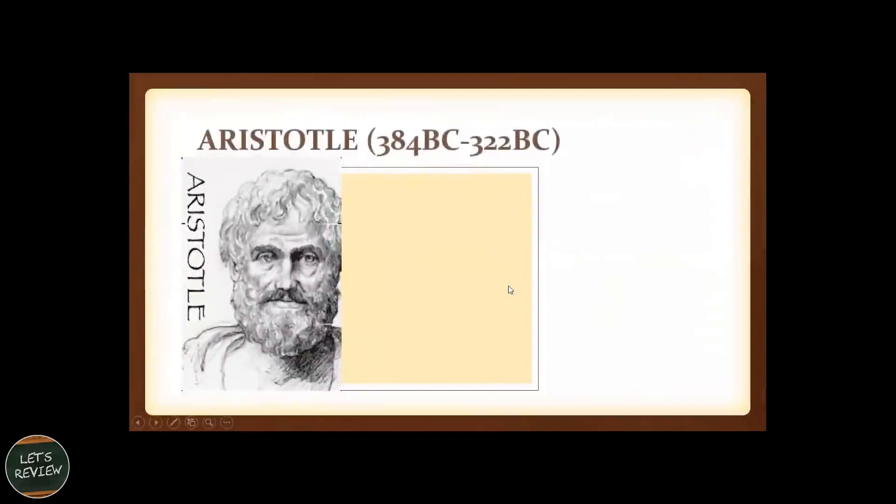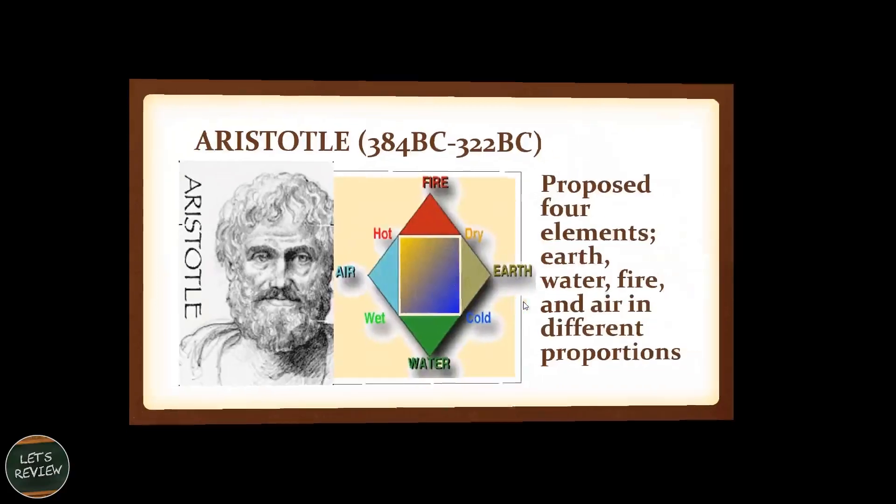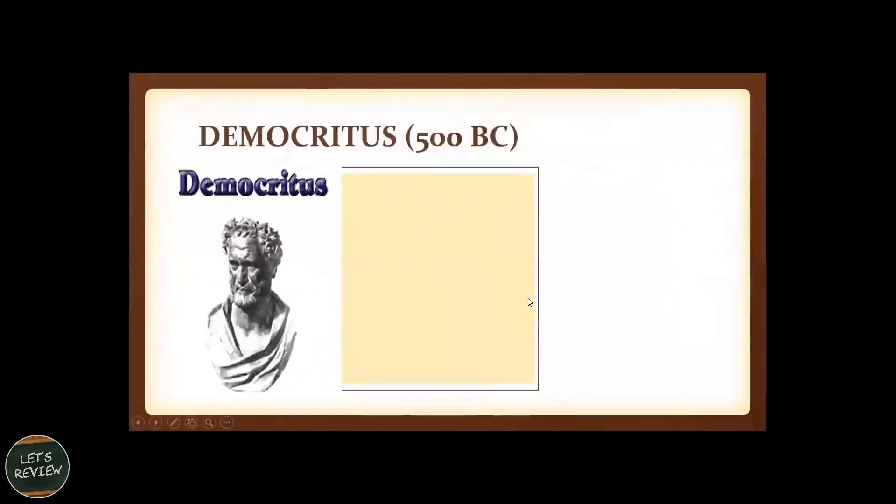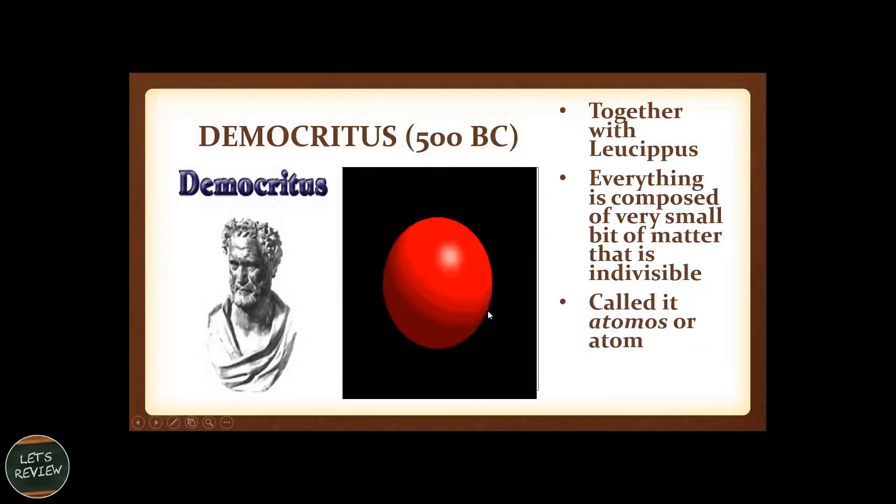Followed by Aristotle, 384 BC to 322 BC. He proposed four elements also: earth, water, fire, and air in different proportions. Next is Democritus, together with Leucippus. Everything is composed of very small bits of matter that is indivisible, and he called it atomos, or atom.